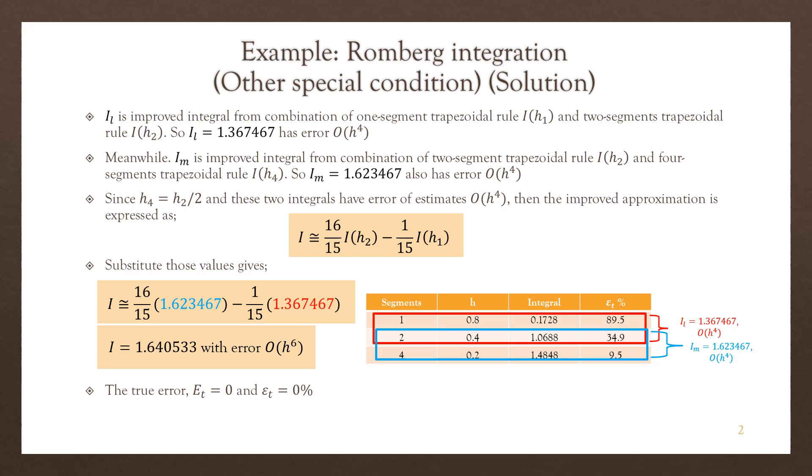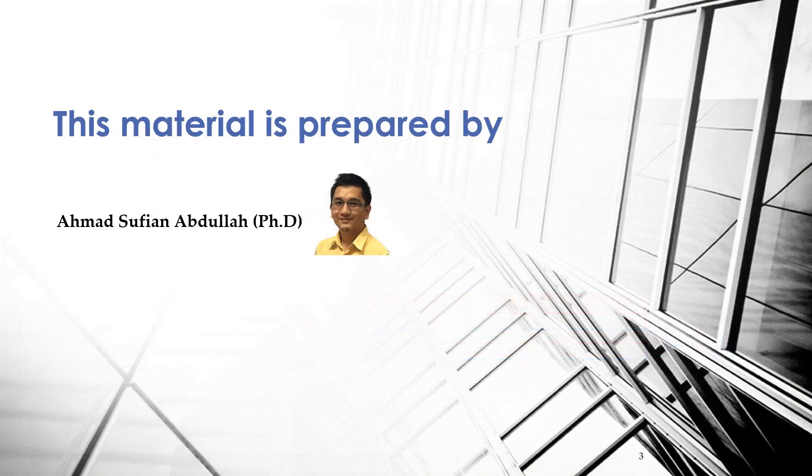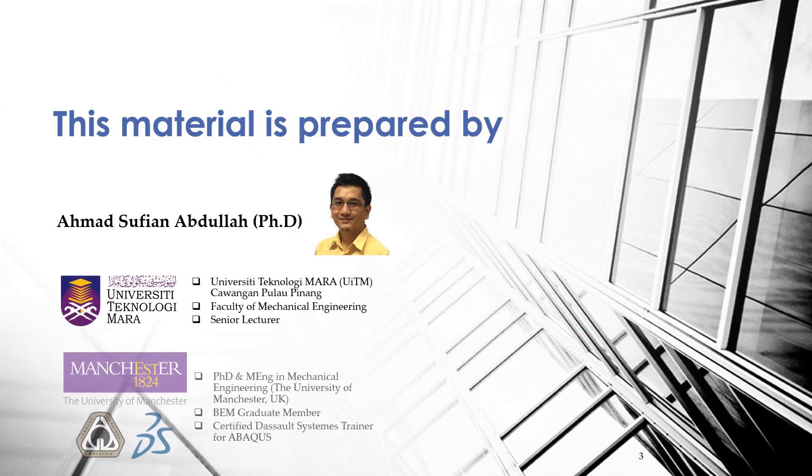You can see how much it has been improved when we apply Romberg integration in the second step, or we can say a second step, by combining the O(h⁴) which we will get O(h⁶) estimate of error. That's all for the Romberg integration exercise for today. Thank you very much.